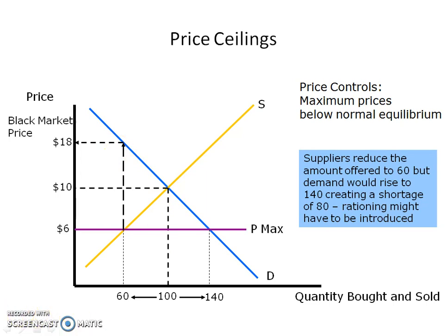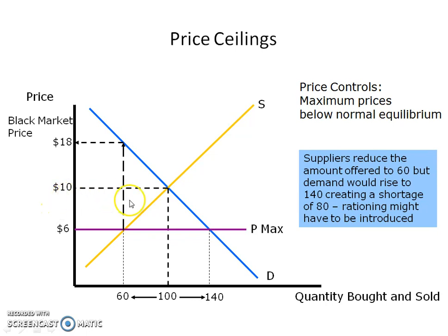The most common example of this type of government control in a market would be rent control. If we add a couple of zeros to each of these prices — so $600, $1,000, $1,800 — what we might see in a place like New York City is that the equilibrium price for an apartment is $1,000 and the equilibrium quantity is 1,000 apartments.